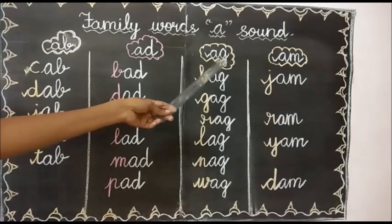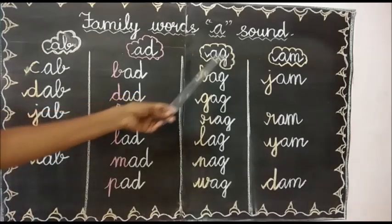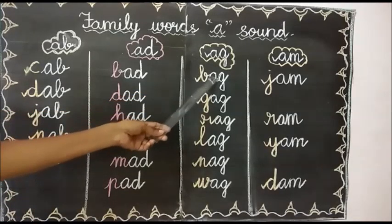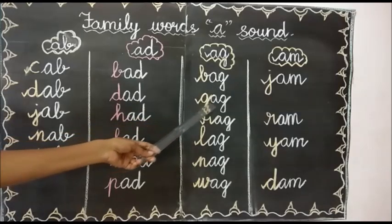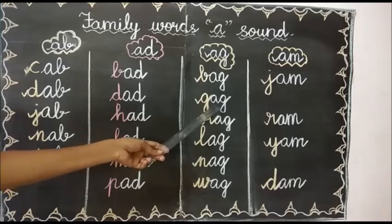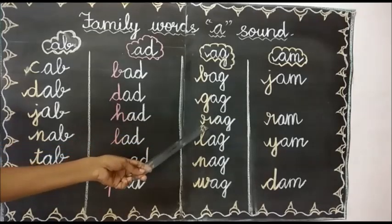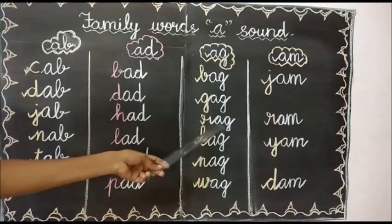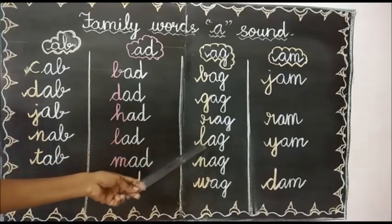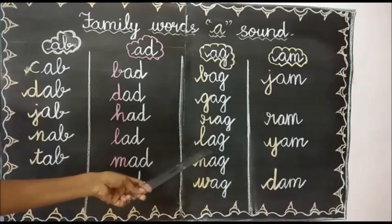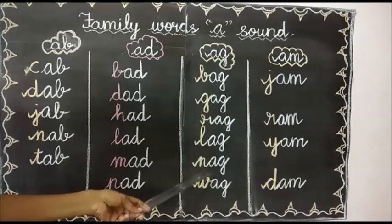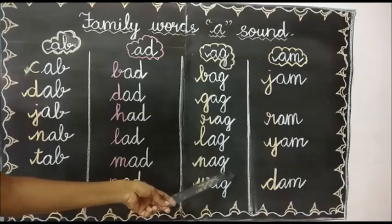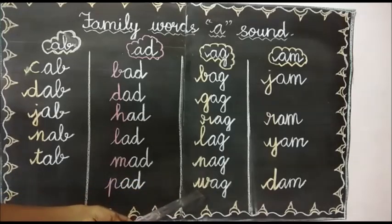Now we are going to see AG words. A, G — ag. First one: bag. B, A, G — bag. Next one: gag. G, A, G — gag. What is the next one? Rag. R, A, G — rag. Next one: lag. L, A, G — lag. Next one: nag. N, A, G — nag. Next one: wag. W, A, G — wag.